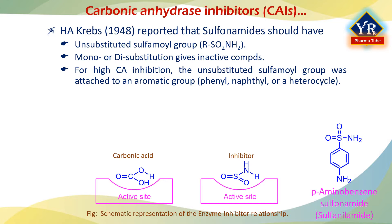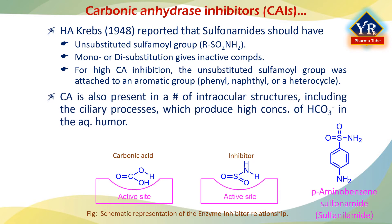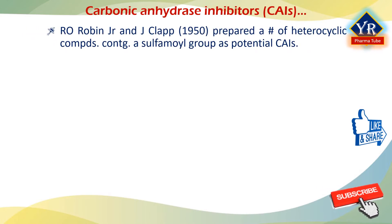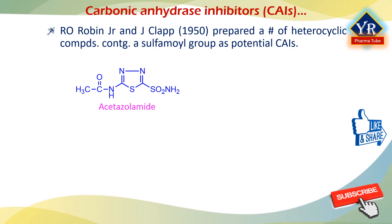Before further discussion, it may be mentioned that carbonic anhydrase is also present in a number of intraocular structures, including the ciliary processes, which produce high concentrations of bicarbonate in the aqueous humor. A carbonic anhydrase inhibitor reduces the rate of aqueous humor formation, leading to reduction of intraocular pressure in patients with glaucoma. Robin and Clapp in 1950 prepared a large number of heterocyclic compounds containing a sulfamoyl group as potential carbonic anhydrase inhibitors. Out of these studies emerged the first commercial sulfonamide, acetazolamide, which was introduced in 1953.